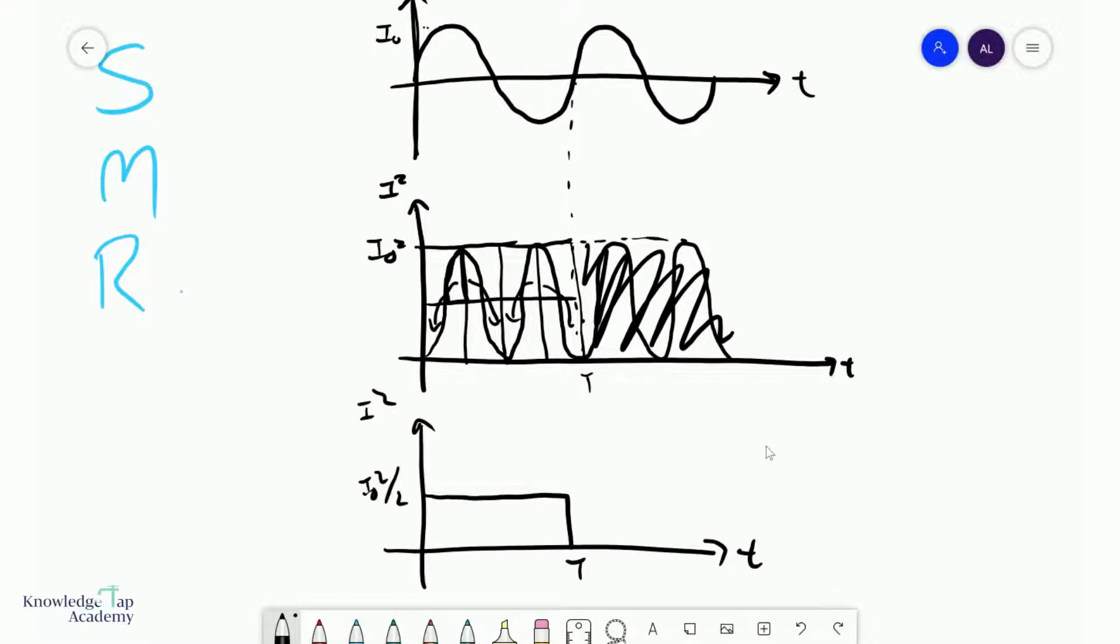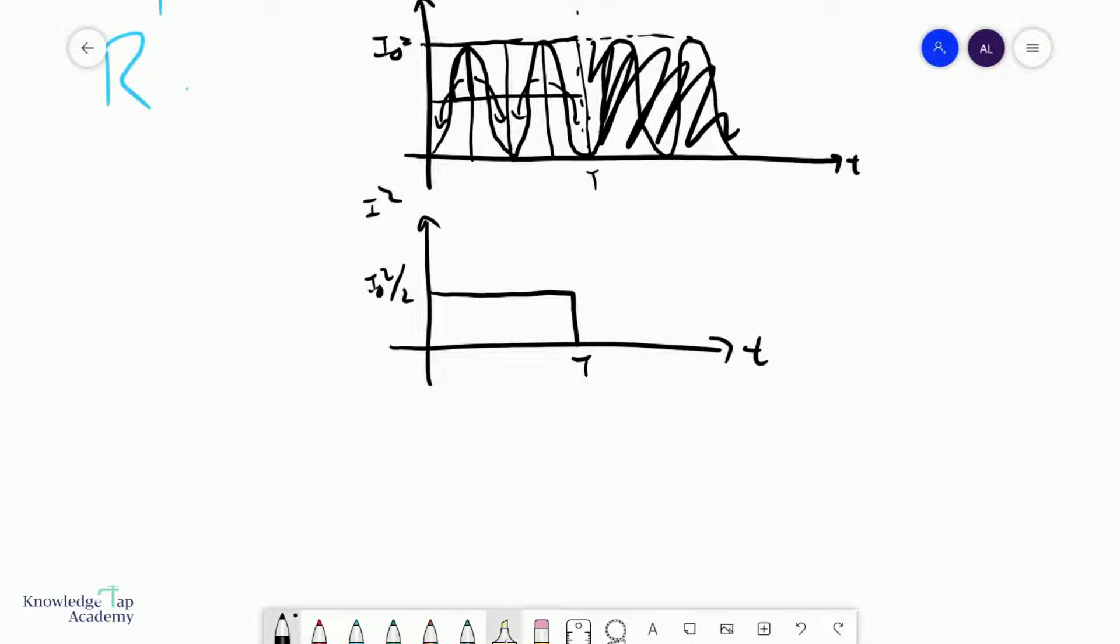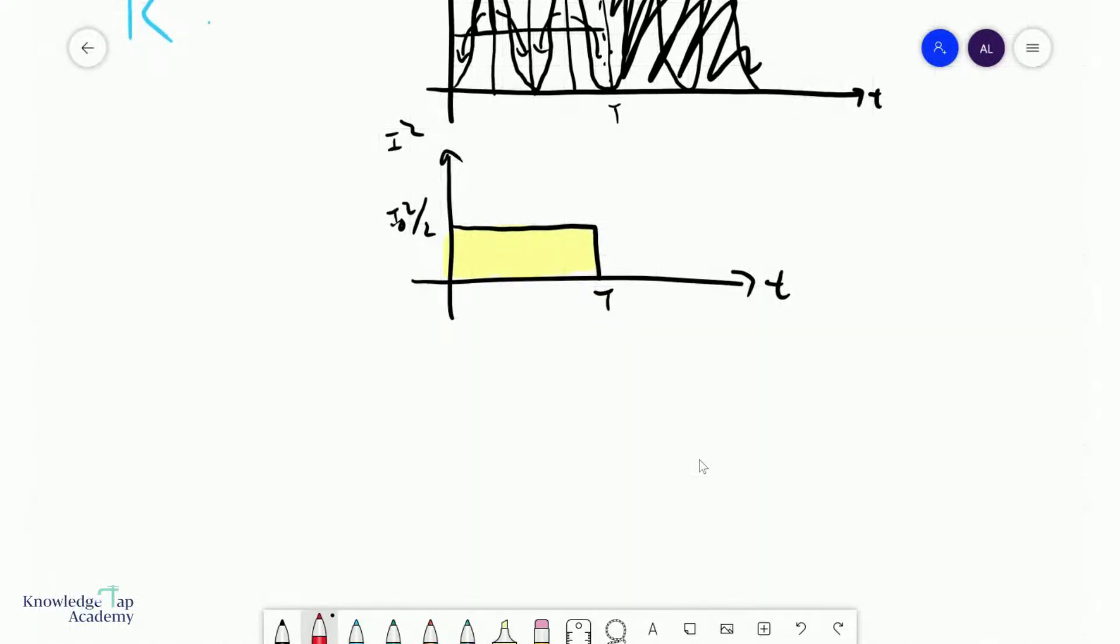Now, with this simplified graph, well, that's an area I can definitely compute. And so, let's do it. The area would simply be I0 squared over 2 times T. And then, of course, I have got to divide this by the period.